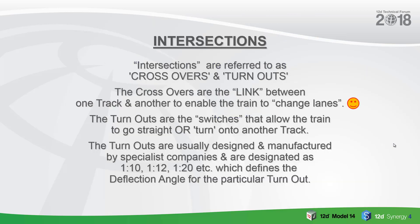On to intersections. Intersections, which we don't really have in rail, are referred to as crossovers and turnouts. The crossovers are the links between one track and another to enable the train to change lanes. The turnouts are the switches that allow the train to go straight or turn from one track onto the crossover and then at the other end turn back off onto the next track. The turnouts are usually designed and manufactured by specialist companies and are designated as, say, a 1 in 10, a 1 in 12, 1 in 20, etc., which defines the deflection angle for a particular turnout.